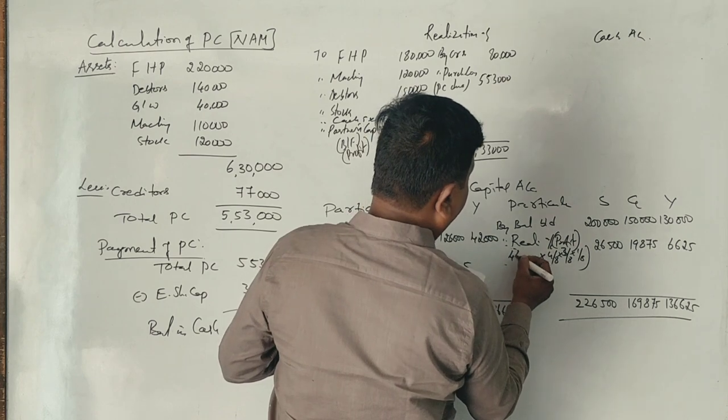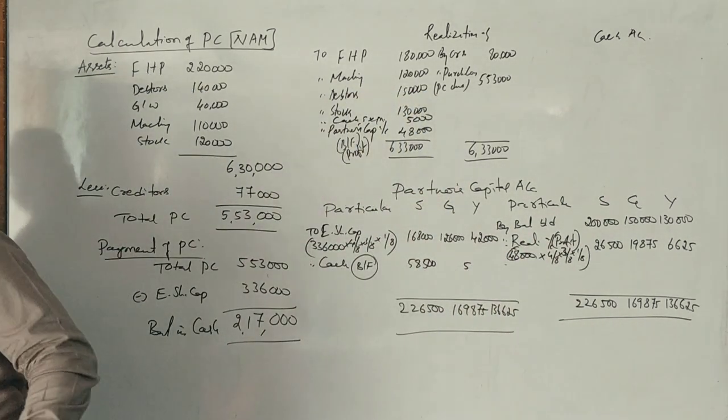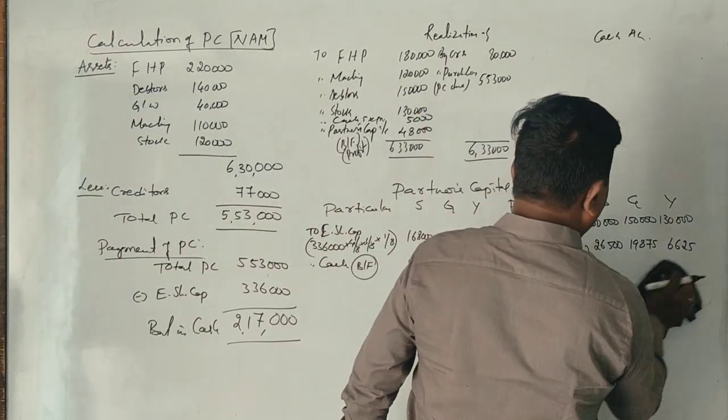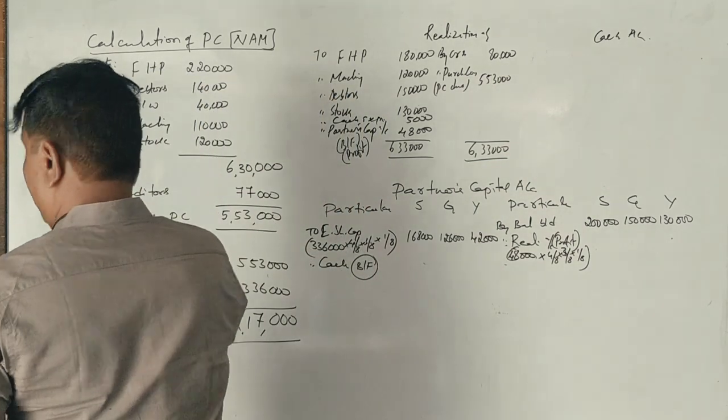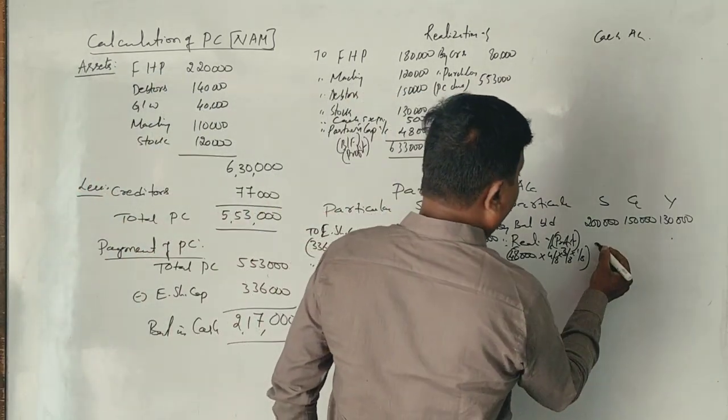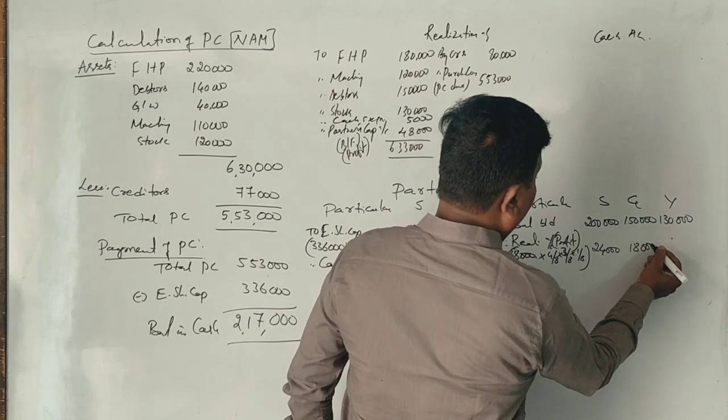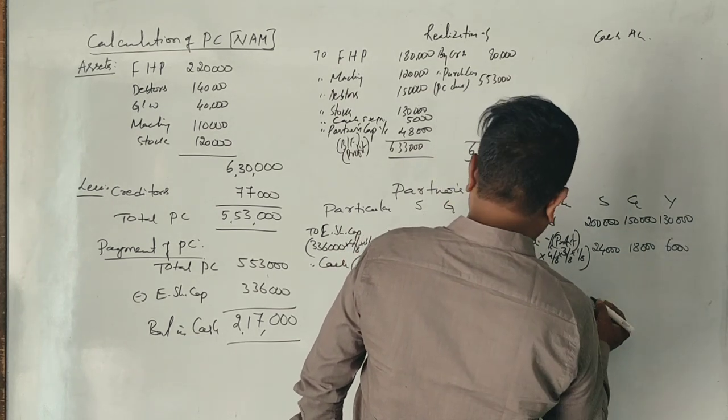The distribution in 4:3:1 ratio: 24,000 for the first partner. Yes, 24,000, 18,000, and 6,000.